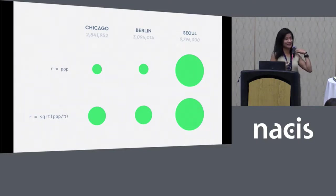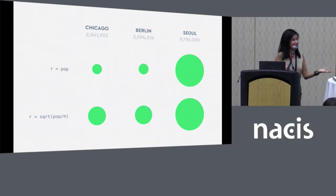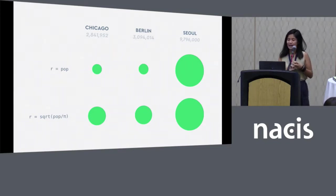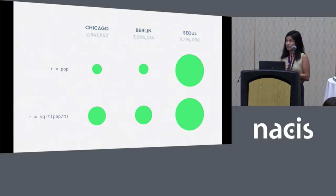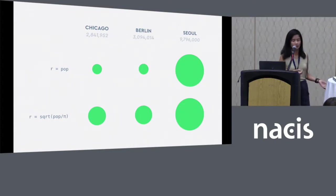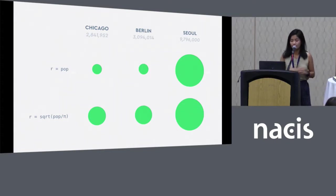Taking a data set of populated places from Natural Earth — and this is not the first time we've seen this data set today, which is cool — I want to add some circles to my map and scale them by population. The style property for setting the size of circles in Mapbox GL is circle radius.